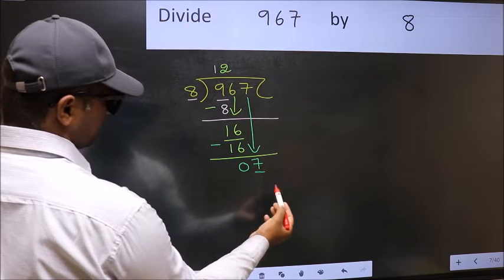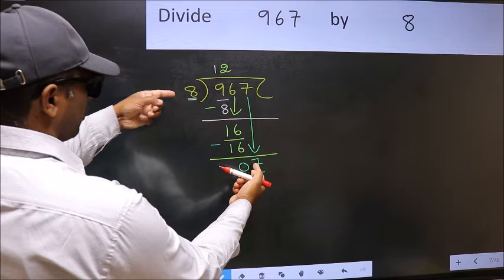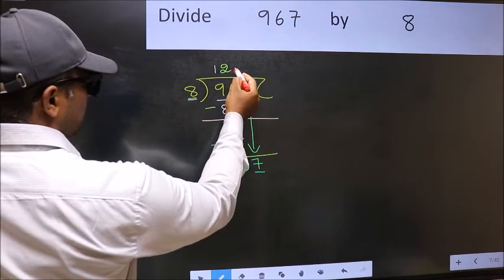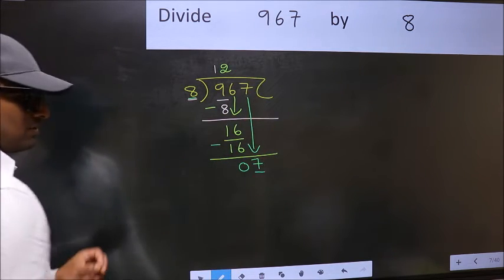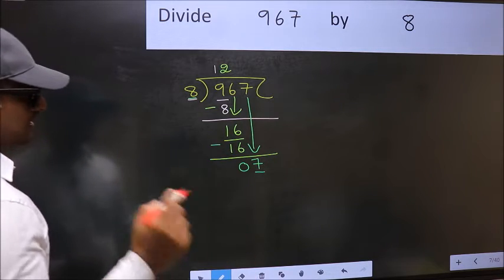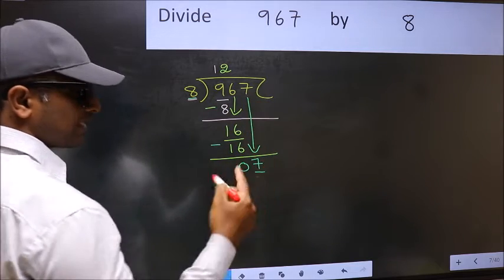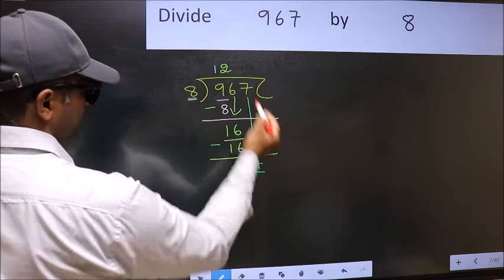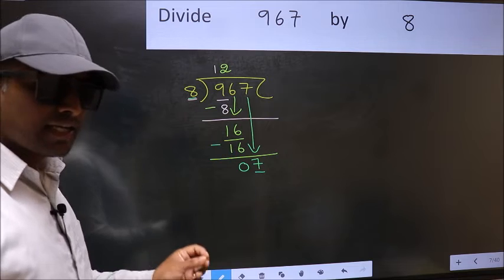Here we have 7 and here 8. 7 is smaller than 8. So what many do is they directly put dot and take 0, which is wrong. Why is it wrong? Because just now you brought this number down, and in the same step, you want to put dot and take 0, which is wrong.